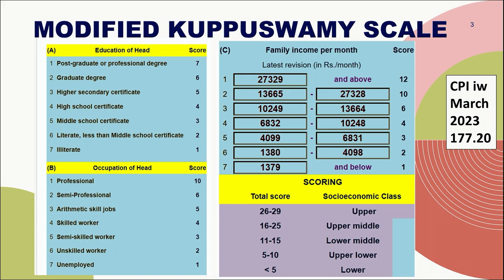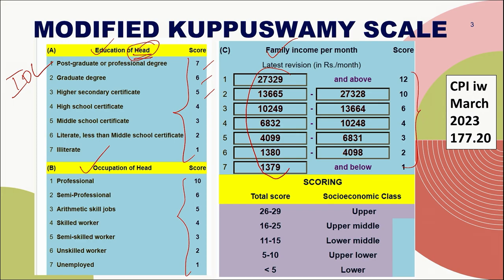The modified Kuppuswamy scale classifies socioeconomic status based on income, occupation, and literacy — I give the mnemonic IOL. Each category has separate scores. Scores are assigned based on the education of the head of the family, the occupation of the head, and the family income per month. The income is revised based on the recent Consumer Price Index update, and the version used here is for March 2023 CPI. Online calculators are available for this scale.